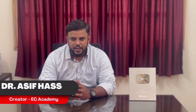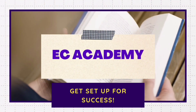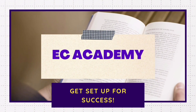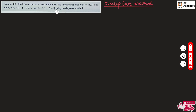Hello friends, welcome to EC Academy. In this lecture, let us understand a problem on overlap save method. We need to find the output of a linear filter whose impulse response is given, and also the input sequence is given, using the overlap save method.